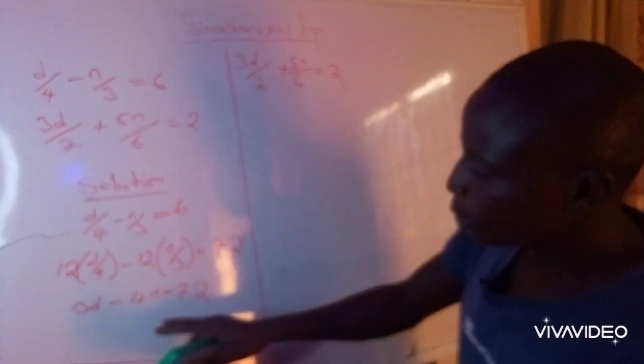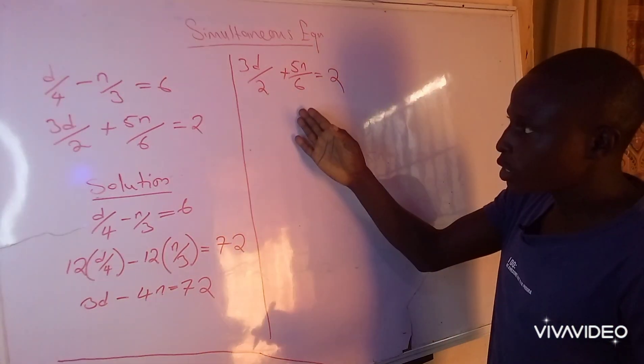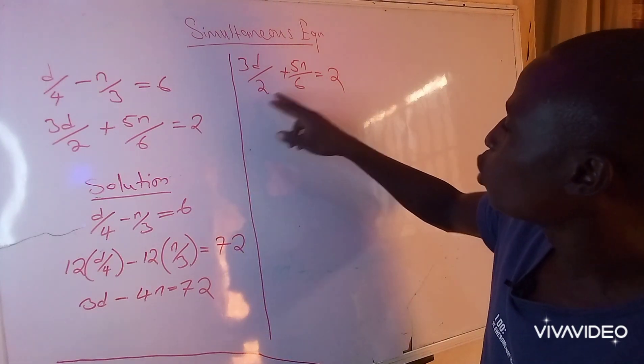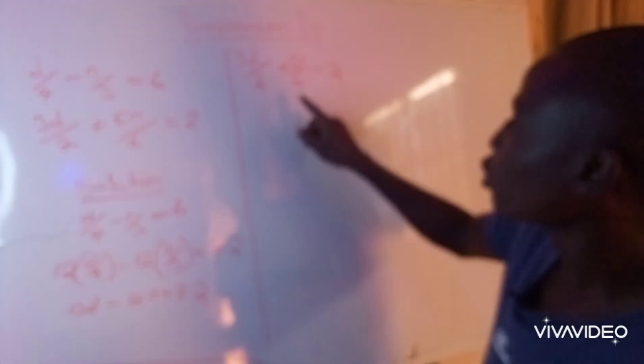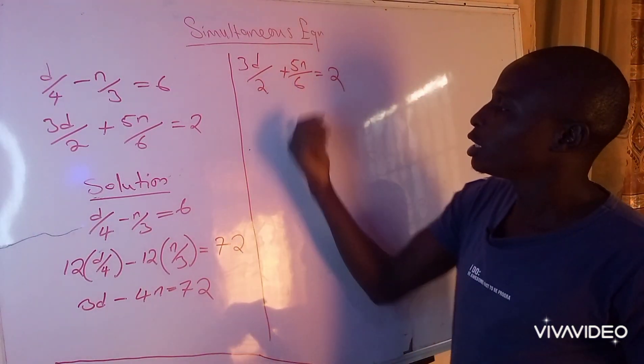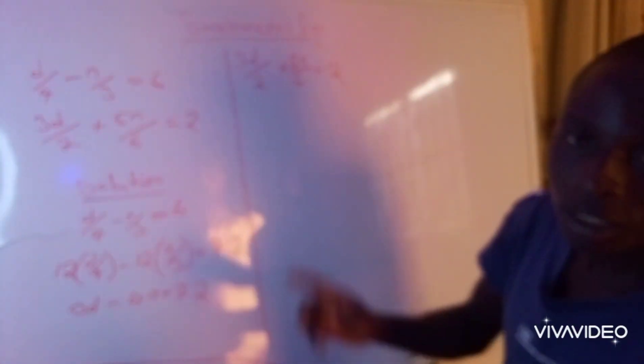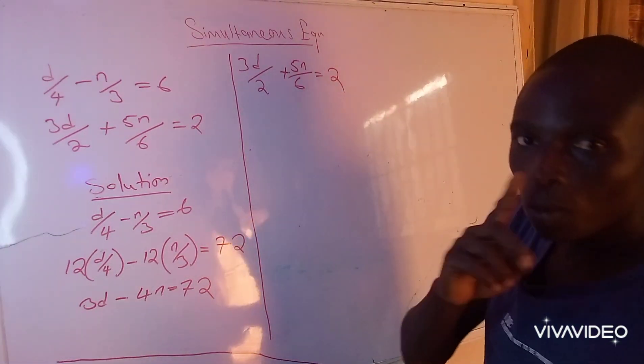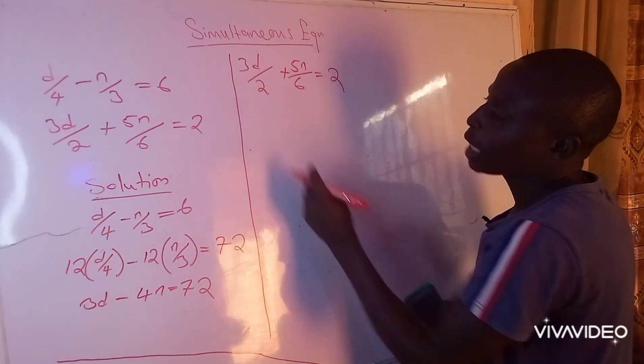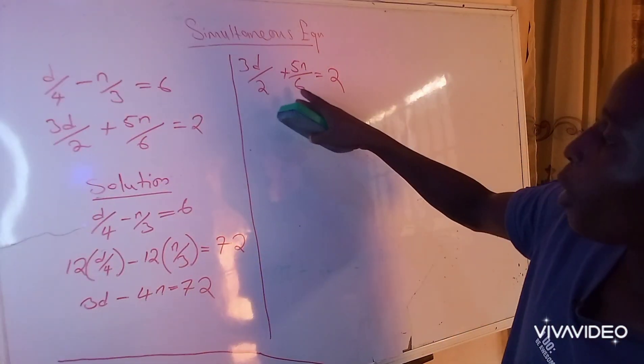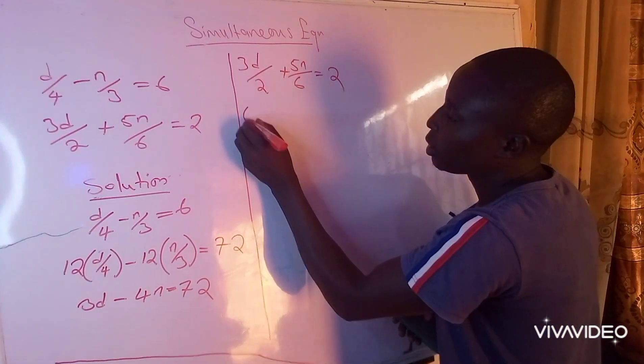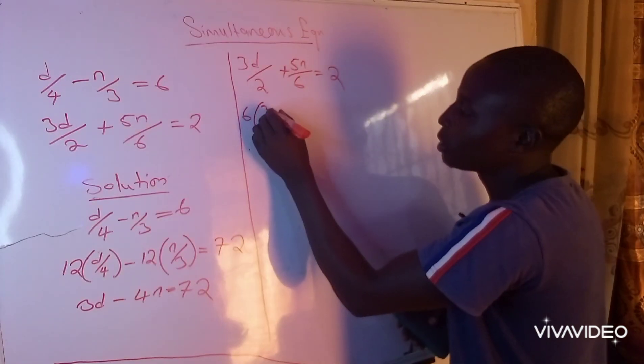The same thing we did here, we are now going to do it here. The LCM of 2 and 6, of course, is 6, because 2 will go into 6 three times, and 6 will go into 6 once. That means I have to multiply all through by 6.